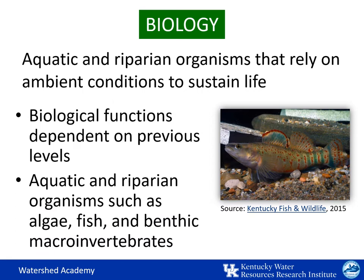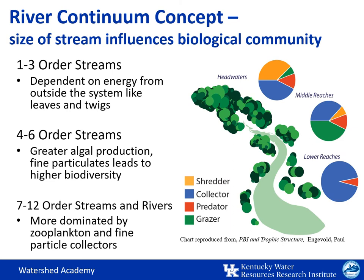When we look at biological functions, we're looking at the prevailing or current existing conditions necessary to sustain life for aquatic and riparian organisms such as algae, fish, and benthic macroinvertebrates. The river continuum concept generalizes the way in which biological communities function depending on the size of the stream or river.